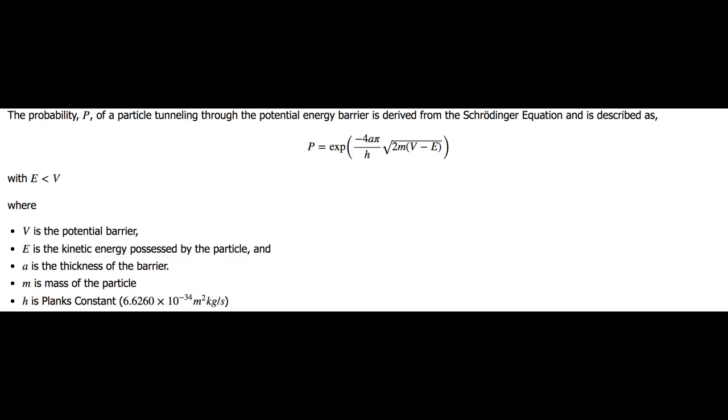This equation states that the probability of tunneling to occur depends on the mass, the potential, and the kinetic energy. The probability will decrease as the mass of the object and the potential barrier is increased.